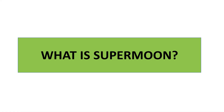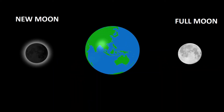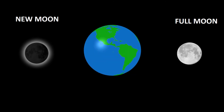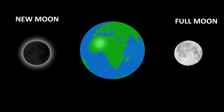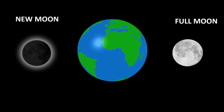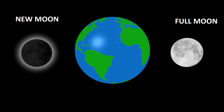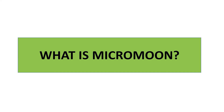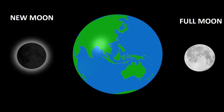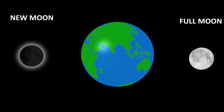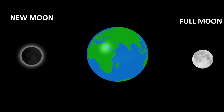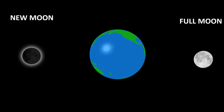What is a Super Moon? When the Full Moon or New Moon occurs during the Moon's closest approach to Earth, it is often called a Super Moon. What is a Micro Moon? A Micro Moon happens when a Full Moon or a New Moon coincides with the point in the Moon's orbit farthest away from Earth.